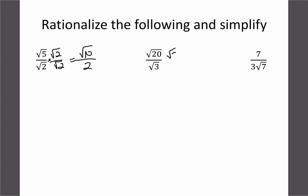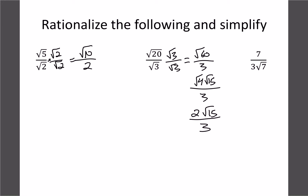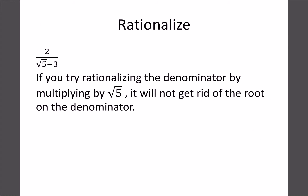The next one we multiply by root 3, giving us root 60 over 3. Root 60 simplifies — breaking into 4 and 15 — giving 4√15 divided by 3, and root 4 simplifies to 2, so we get 2√15 over 3. For the last basic one, multiplying top and bottom by root 7 gives 7√7 over 21. We can cancel the 7s, leaving root 7 over 3.